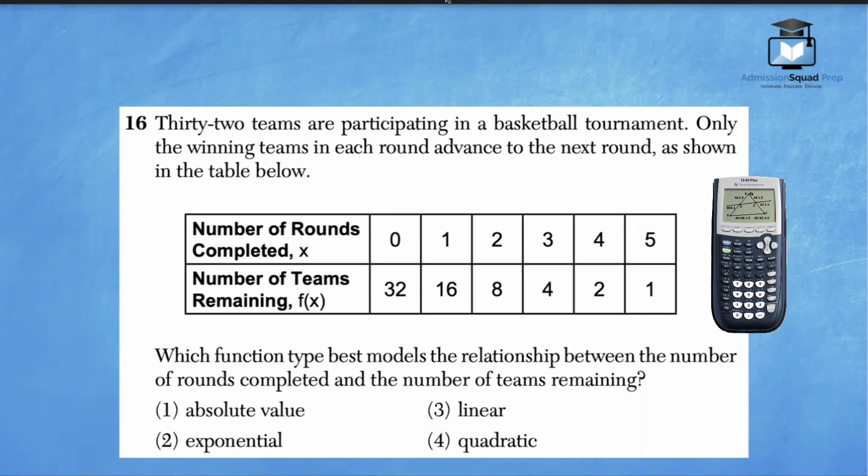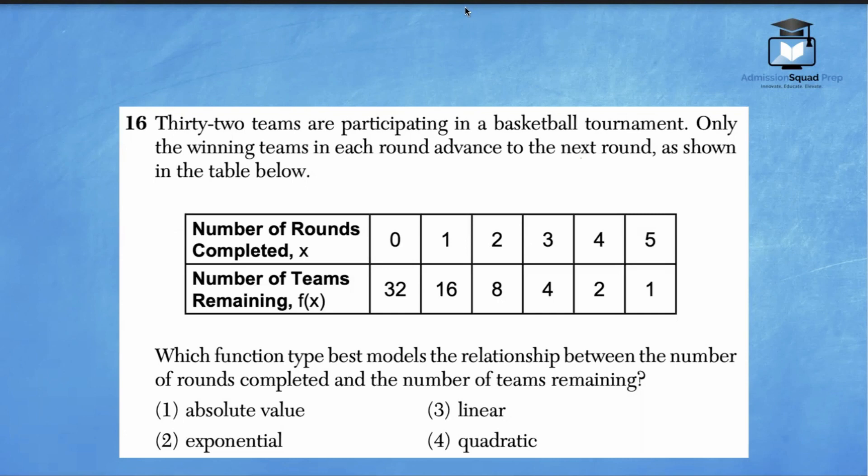Let's get started. Question number 16 states, 32 teams are participating in a basketball tournament. Only the winning teams in each round advance to the next round as shown in the table below. We have number of rounds completed as our input value, and we have number of teams remaining as our output value.